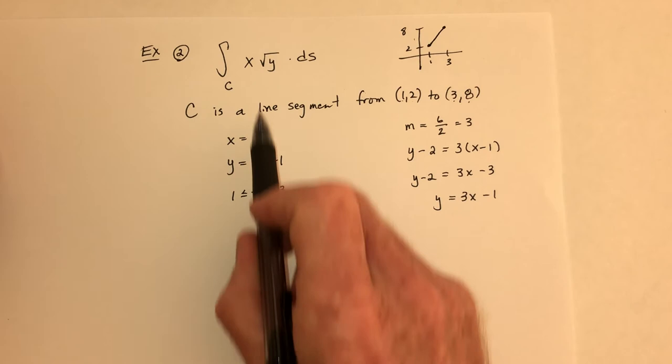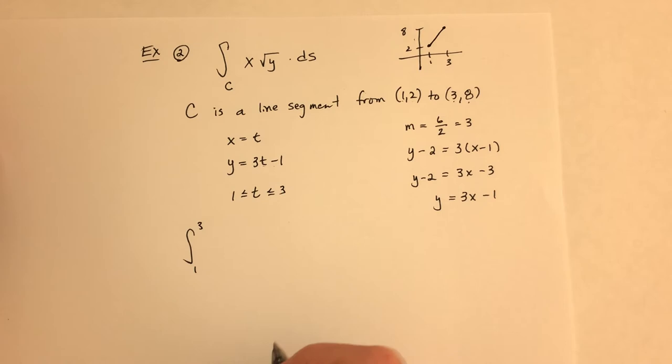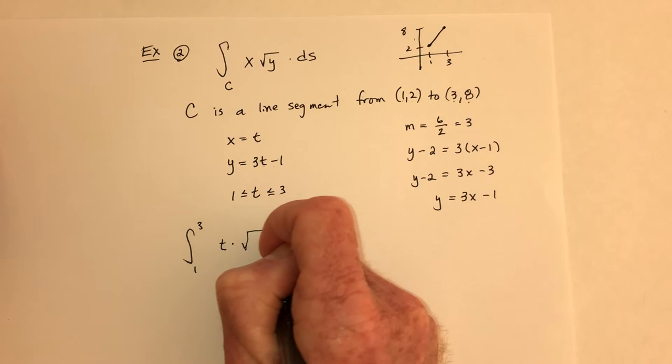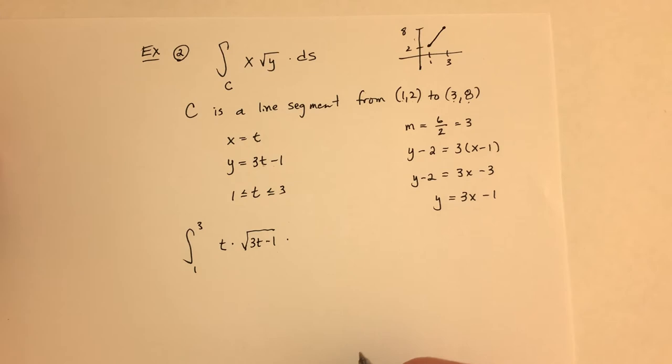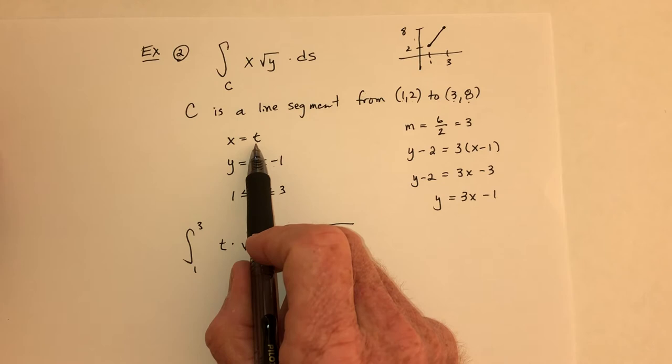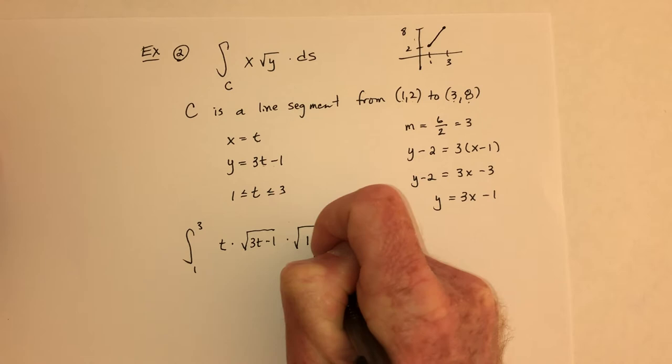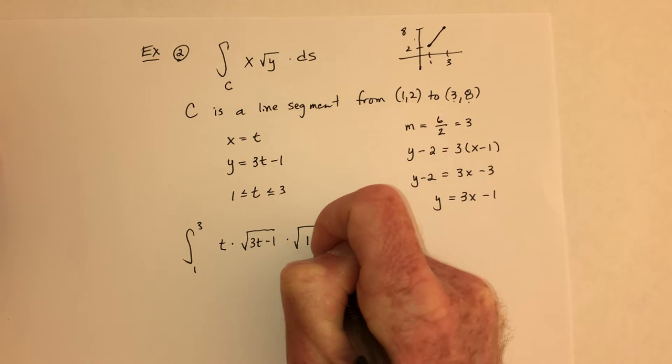Now set up the integral. Integrate from 1 to 3. Substituting: x = t and y = √(3t − 1). For arc length: the derivative of x = t is 1, squared is 1; the derivative of y = 3t − 1 is 3, squared is 9. So the square root of 1 + 9 = √10 can be factored out.